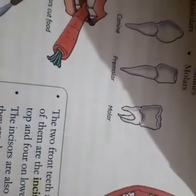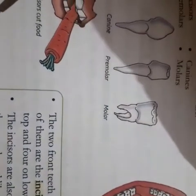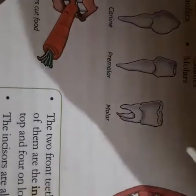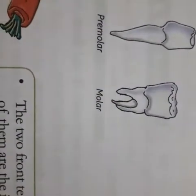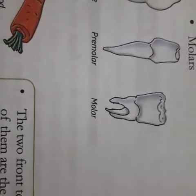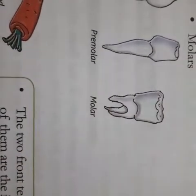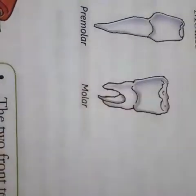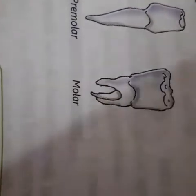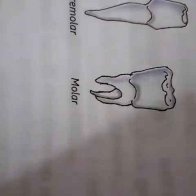Next to the canine teeth are the premolars. We have eight premolars in all — four on the top and four on the bottom. These teeth are bigger and stronger, and have ridges which make them useful for crushing food. They are also called crushing teeth.